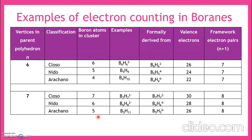For the arachno cluster derived from the 7-vertex parent, two corners are removed, leaving 5 boron atoms. The general formula for an arachno cluster is B_p H_p^(6−). For this case, B5H5^(6−); adding 6 hydrogens gives B5H11. Valence electron count: 5×3 + 11 = 26. With 5 boron atoms in the arachno cluster, the parent polyhedron has 7 corners (5+2=7), and framework electron pairs = 7+1 = 8.